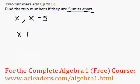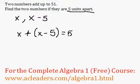We can say then that x plus x minus 5 is equal to 51. Because that's the first number, that's the second number. They add up to 51.